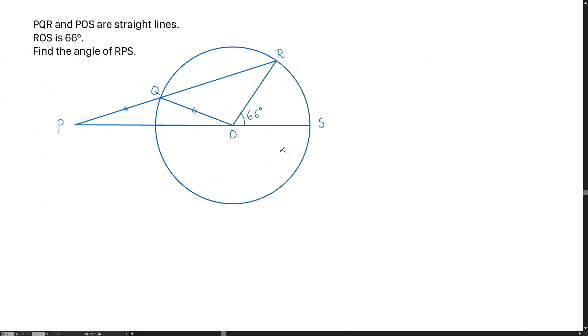Say hi from Charish Math. Here is a question related to geometry. PQR and POS are straight lines. ROS is 66 degrees. Find the angle of RPS.